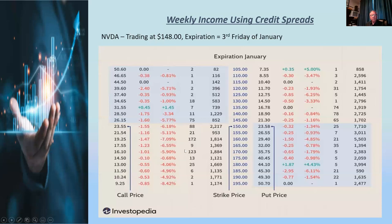Novice options traders look for the cheapest option, buy it, think they'll make a ton of money, and then it expires worthless, losing the whole $9.25. I got really cocky in the early 2000s, made a bunch of money, then started losing by doing options wrong. There is a probability indicator — I recommend 70% or better, which usually puts you in the money. They look more expensive but have a much higher likelihood of actually making it.